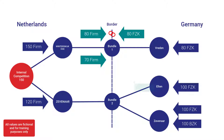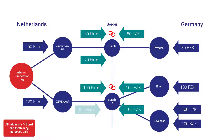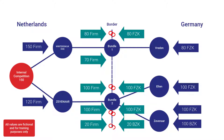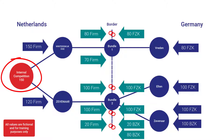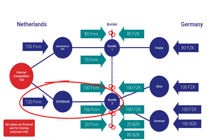At the second bundling point, 100 FZK by OGE are bundled with 100 firm by GTS. On ThyssenGas side, 100 FZK are bundled with 100 firm of GTS, and the remaining 20 firm on GTS side are then bundled with 20 BZK from ThyssenGas. The remaining 80 BZK capacity are then offered unbundled. The results of both bundling point auctions will then compete for the 150 internal capacity — the bigger constraint — while the small constraint is the available 120 capacity on the lower part of the constellation.